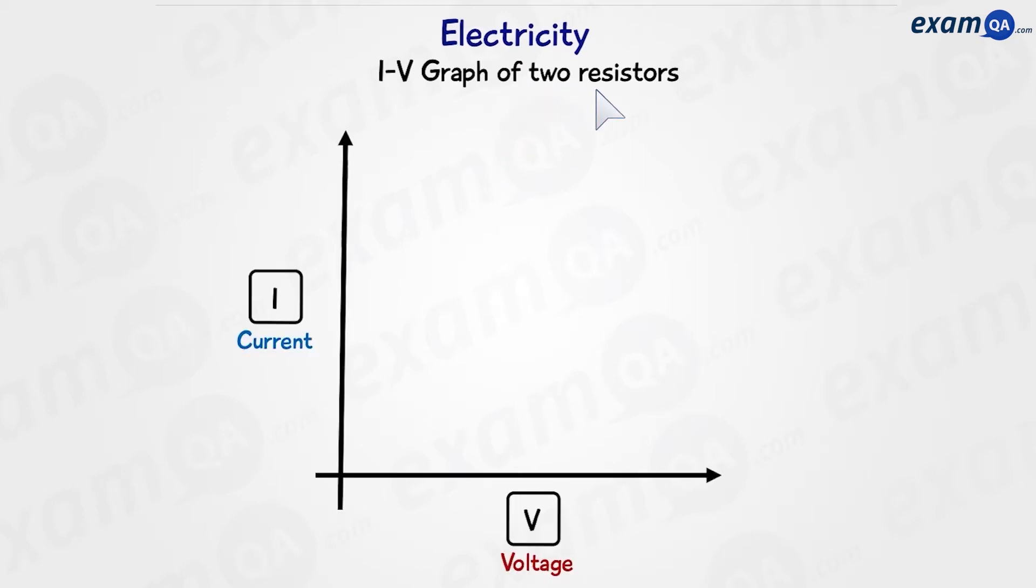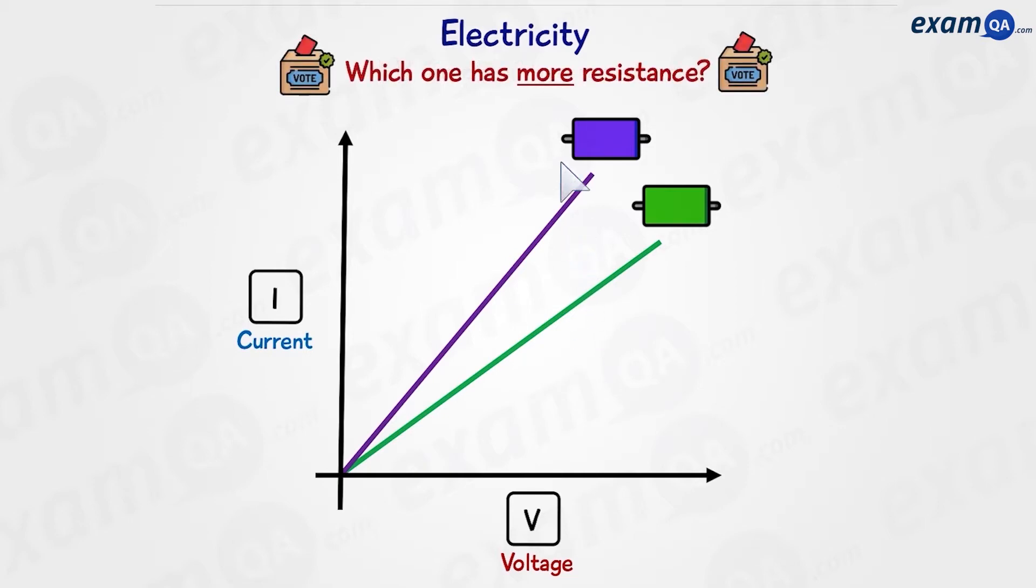Electricity, IV graphs. Let's look at the IV graph of two standard resistors. We have current on the y-axis and voltage on the x-axis. Here's one resistor, and here's another one. From the graph,